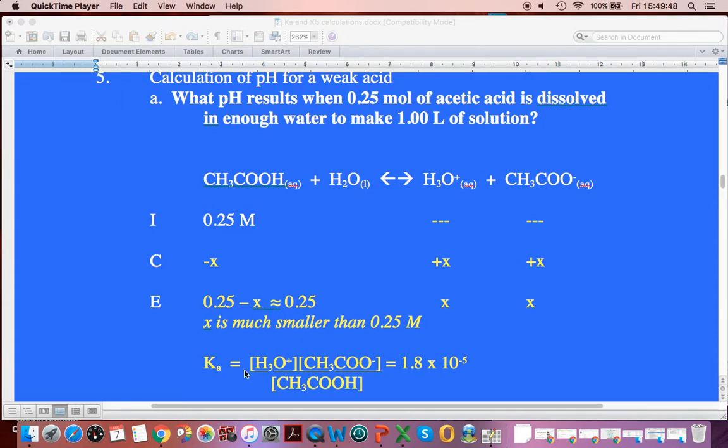So we have our Ka expression. And what are we trying to find? We're trying to find the H3O+. Because if we find the H3O+, we can quickly convert it to pH. So we have to rearrange this equation to solve for H3O+.